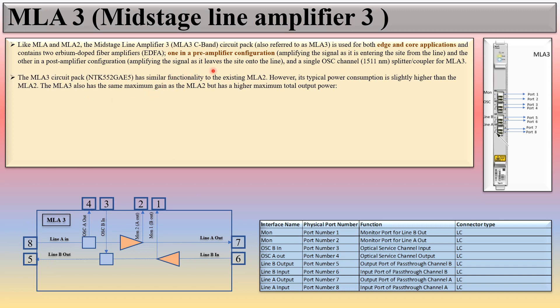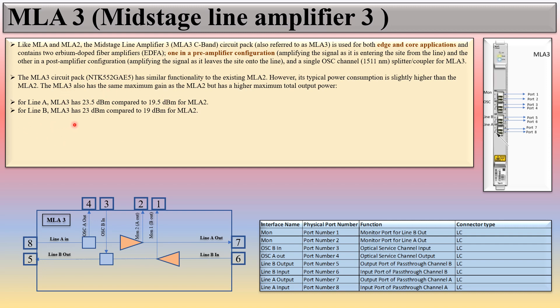MLA3 has similar functionality to MLA2, however its typical power consumption is slightly higher than MLA2. MLA3 also has the same maximum gain as MLA2 but has higher maximum total output power. For Line A, MLA3 has 23.5 dBm compared to 19.5 dBm for MLA2. For Line B, MLA3 has 23 dBm and MLA2 has 19 dBm. So the gain is exactly the same but the maximum total output power is slightly higher for MLA3 than MLA2.